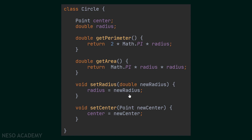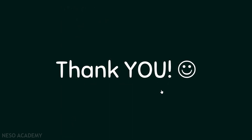Similarly, we create a setCenter method that takes a Point new center as a parameter. Inside this method, we assign the center attribute to equal the value of this new center — the address of the Point passed as an argument is stored in our center. These two methods help us change the values of the attributes of a Circle object.